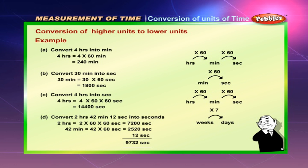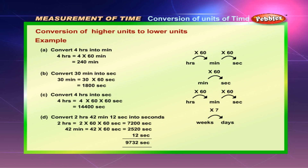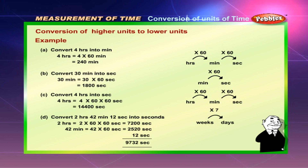Convert 4 hours into seconds. 4 hours is equal to 4 into 60 into 60 seconds, which is equal to 14,400 seconds. Convert 2 hours, 42 minutes, 12 seconds into seconds. 2 hours is equal to 2 into 60 into 60 seconds, which is equal to 7,200 seconds.